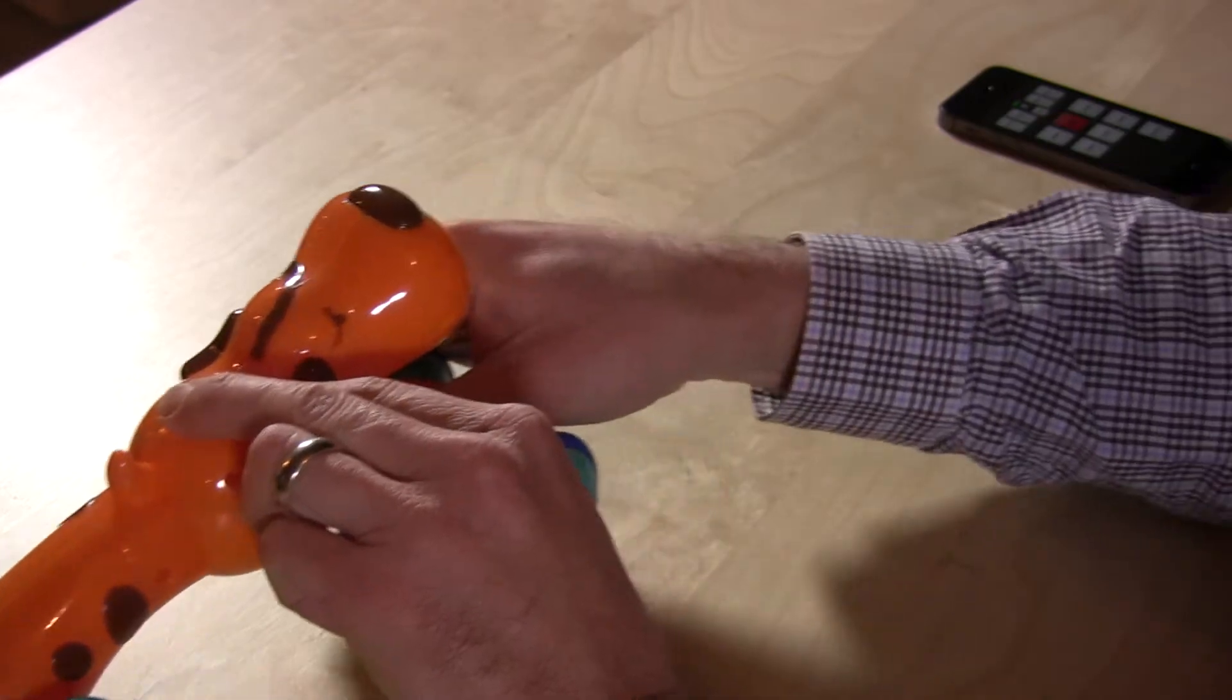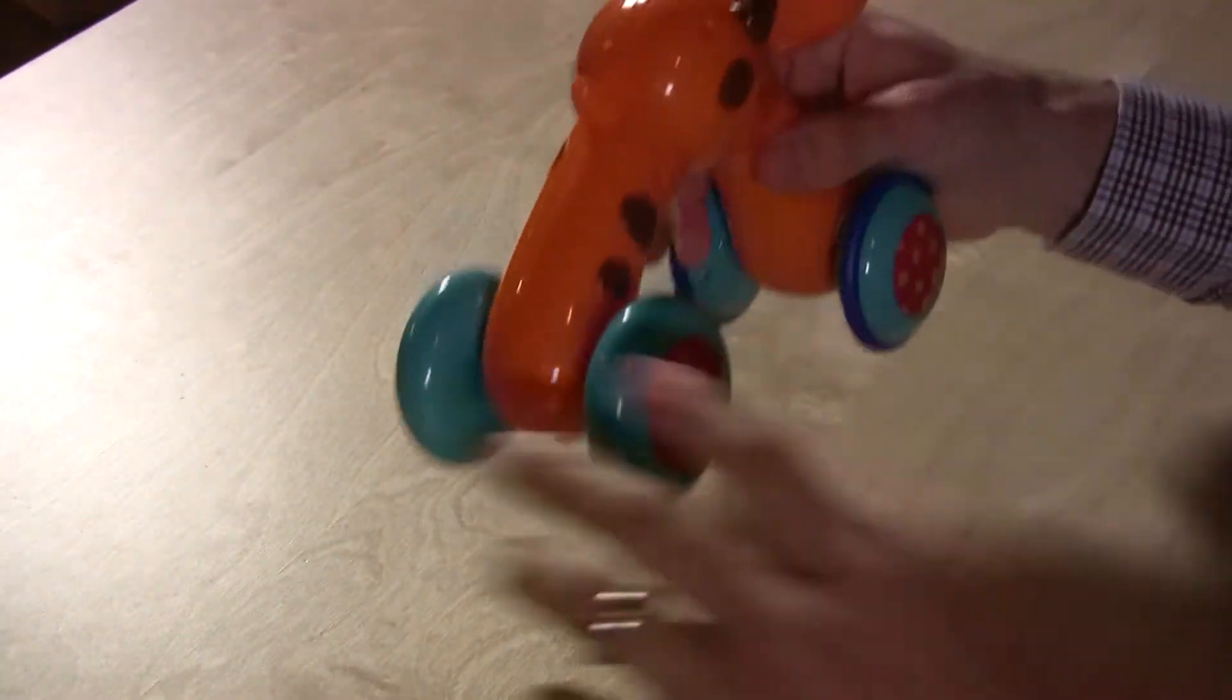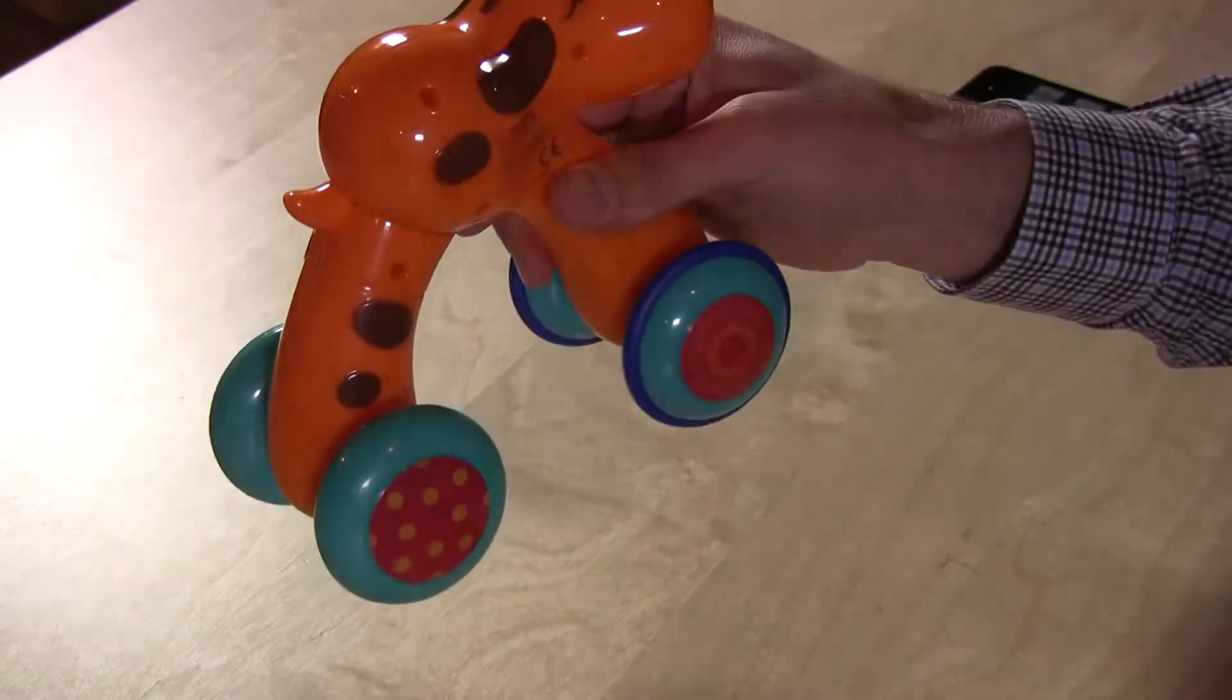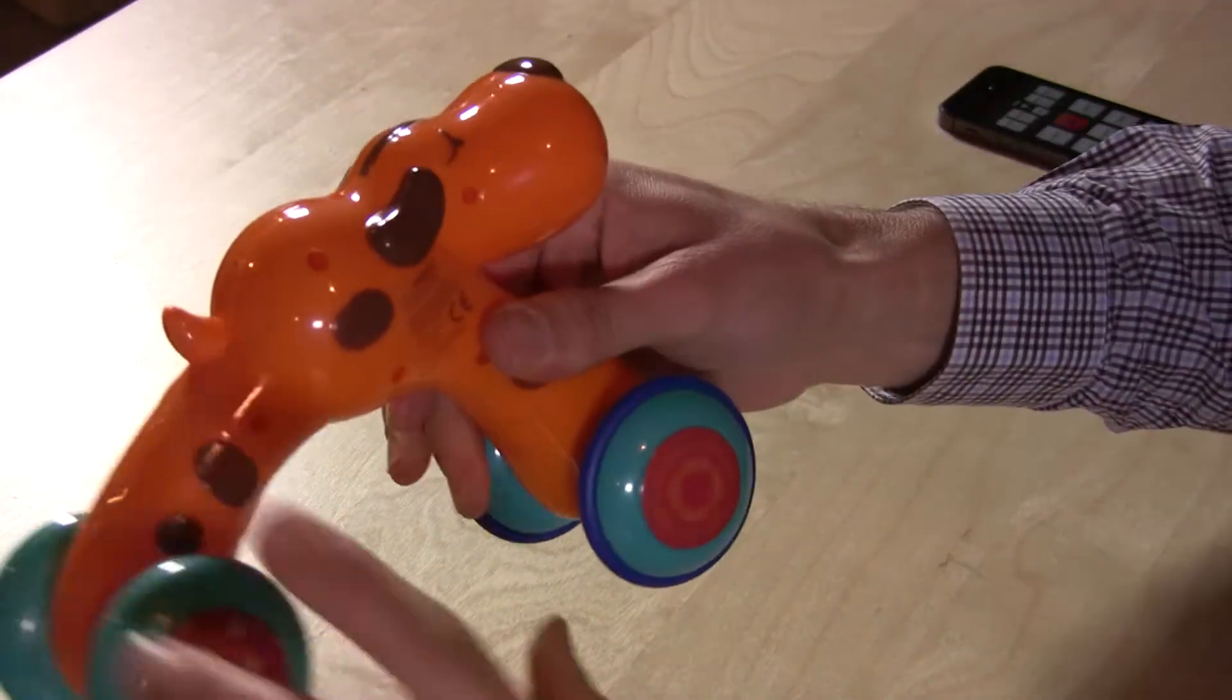But what you do is you just push his little back down here and he then takes off on you. So basically that action of pushing him down winds up his little wheels and he can kind of go for a ride.